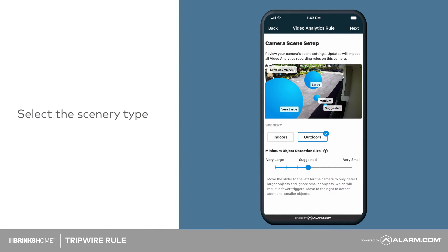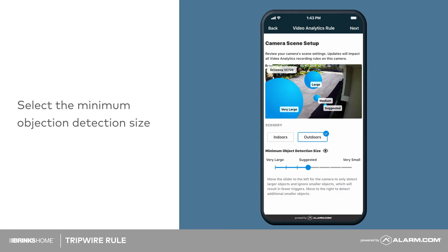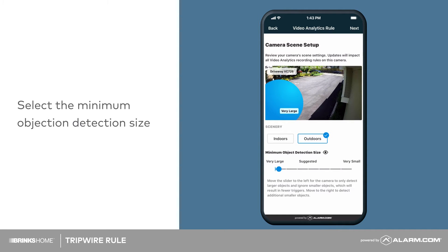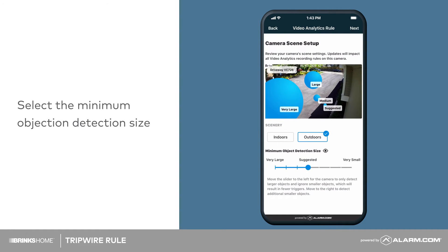Select the type of scenery this camera will view. For this example, we will select Outdoors. Next, select a minimum object detection size. This setting determines how large an object must be to trigger the camera. Tap and drag the slider to adjust, then tap Next.